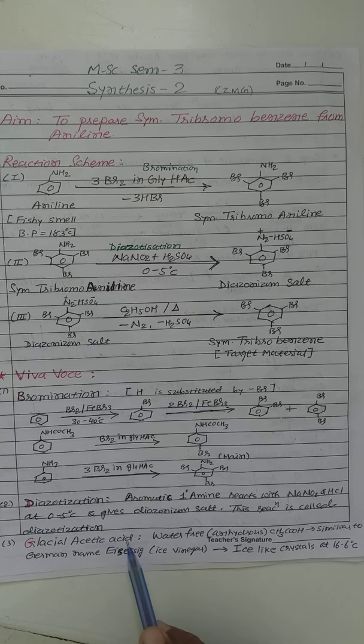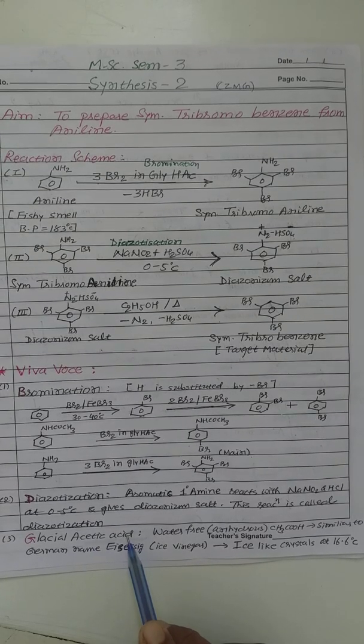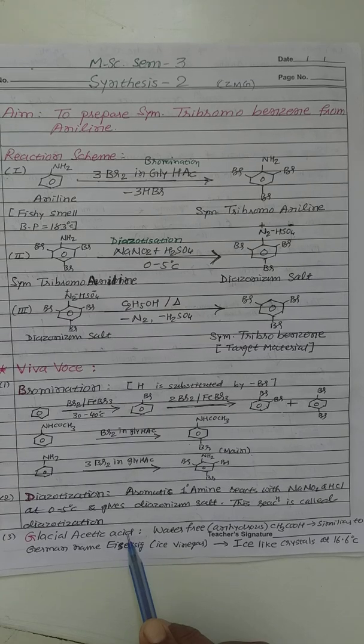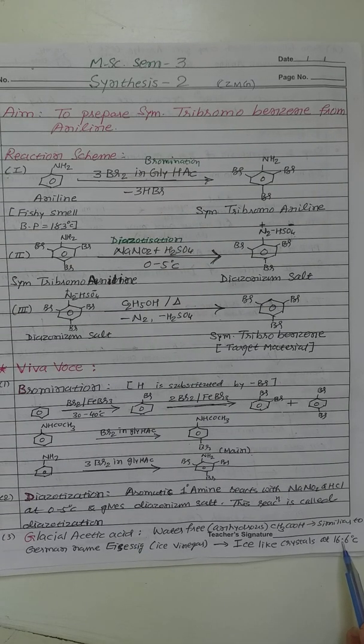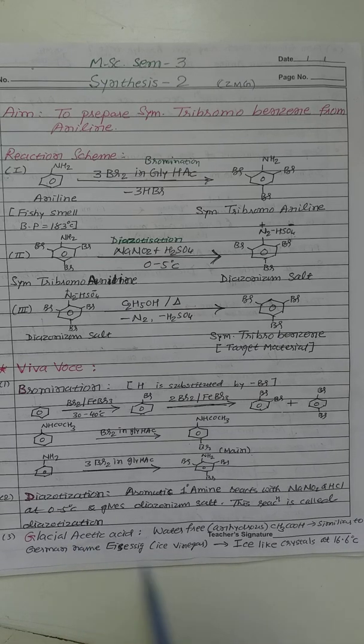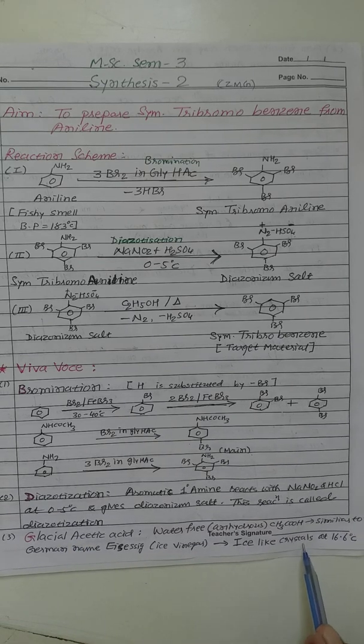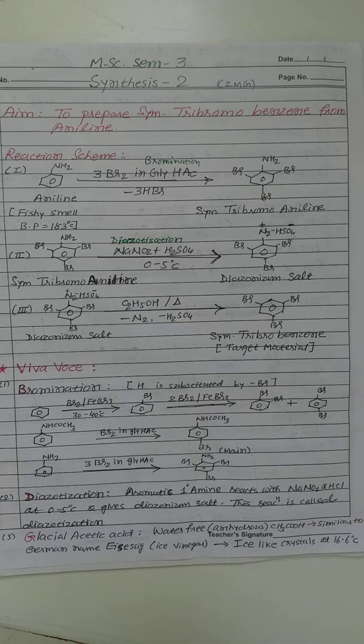If you take acetic acid in a test tube and put in ice bath or refrigerator, at that time at 16.6 degree celsius temperature acetic acid convert in ice like crystal. So it is known as glacial acetic acid and this word is similar to german name is like ice vinegar. So that's meaning of glacial acetic acid.